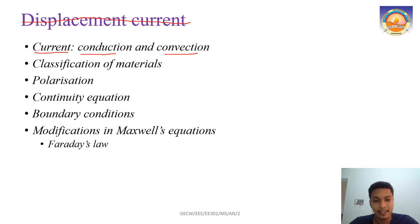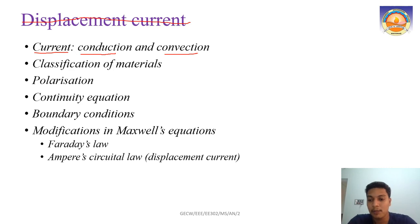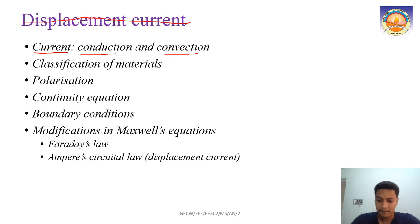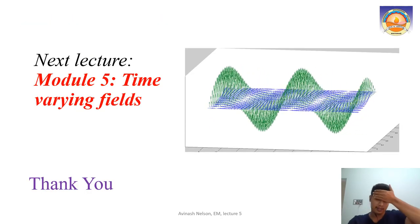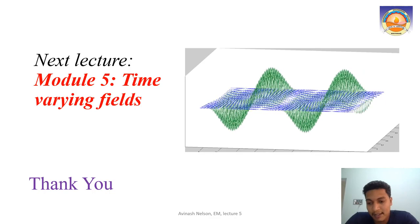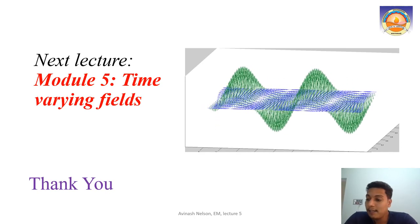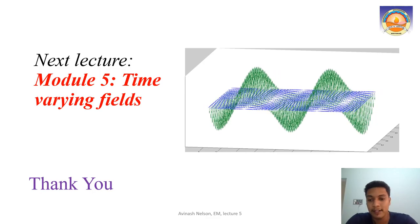These modifications — Faraday's law modification and Ampere's circuit law modification — mark our entry into the time-varying electromagnetic field. These were the contents covered across the seven lectures of this module. A module-level summary will be provided on Google Classroom. In the next module — Module 5 — we will study time-varying magnetic fields in detail: their properties and how to characterize them. Thank you.